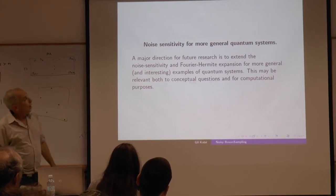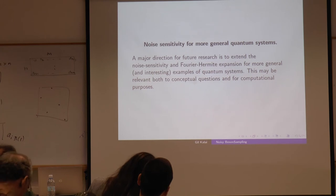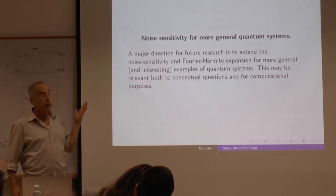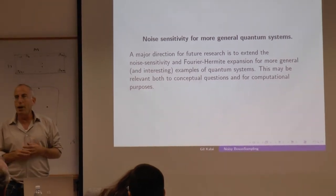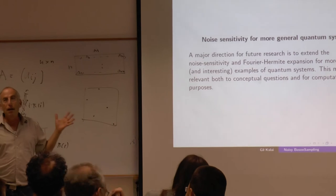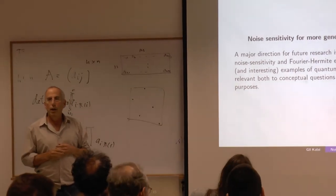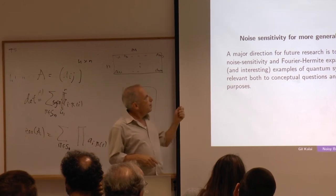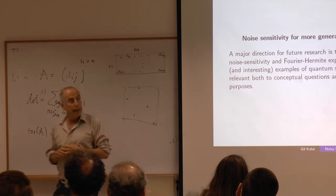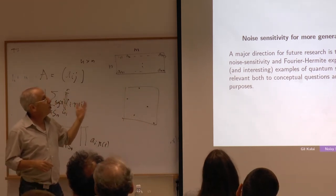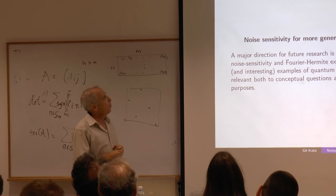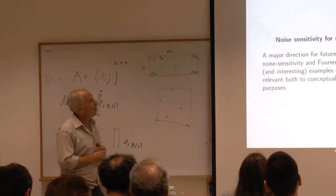The main direction for future research is to extend the noise sensitivity and Fourier expansion to more general and interesting examples of quantum systems. Bosons are of interest even in physics, but this is a very simplified physical system. What is the analog of noise sensitivity, and what is the analog of the Fourier-Hermite expansion, for other types of quantum systems and quantum states? This is quite interesting.